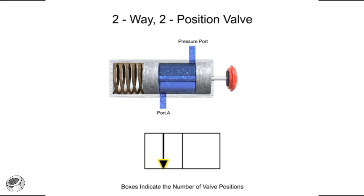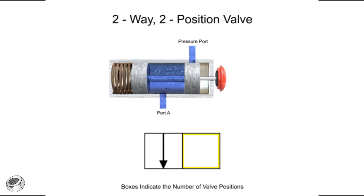A solid arrow indicates the direction of liquid flow. The first position of this valve allows fluid to flow from the pressure port to port A, so an arrow is drawn in the first box to indicate fluid flow. A T indicates that a port or way is blocked or closed. This valve's first position has no ports blocked, but its second position blocks both. Two T's are added to illustrate the lack of fluid flow in the second position.